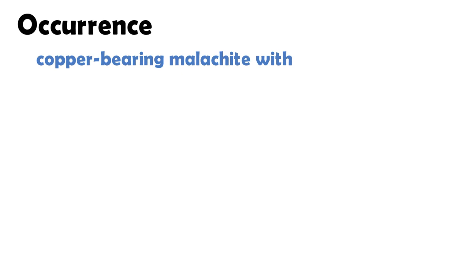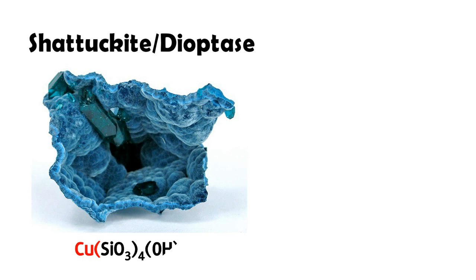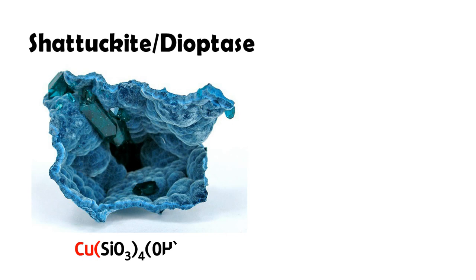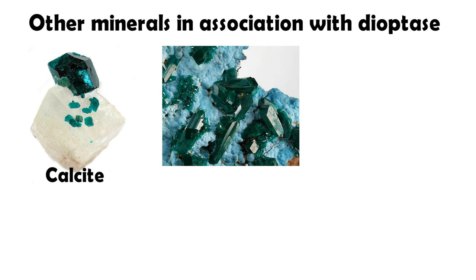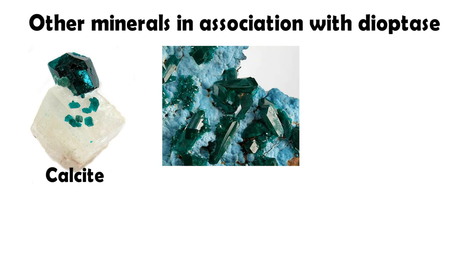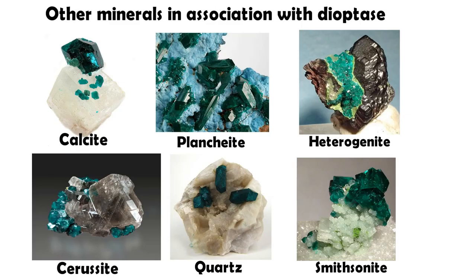Malachite is also a copper-bearing gemstone. Malachite's formula is CuCO3(OH)2. As another mineral, you can see dioptase. Its formula is CuSiO3·4(OH)2. Furthermore, here are other minerals in association with dioptase: calcite, brochantite, wulfenite, cerussite, quartz, and smithsonite.